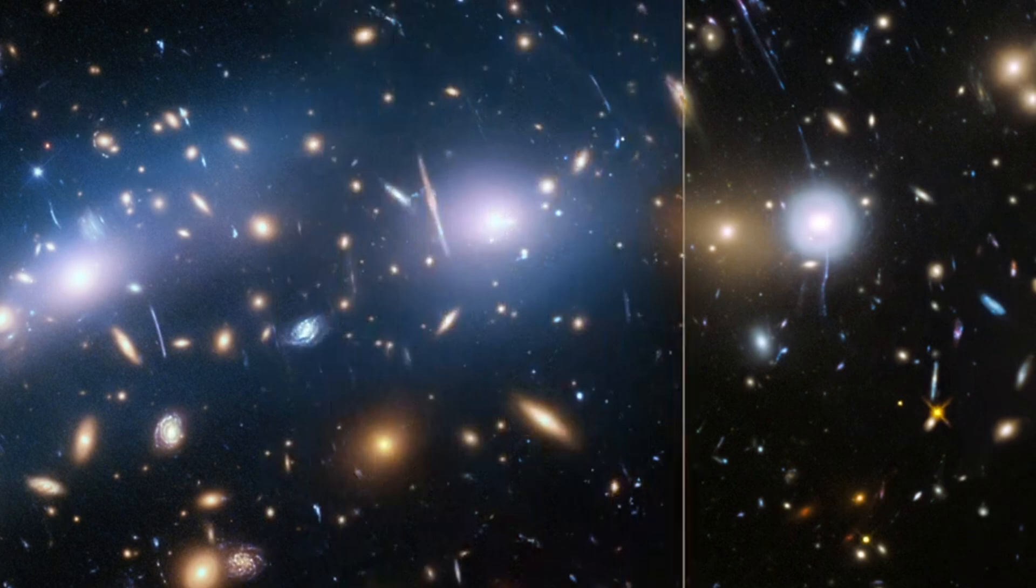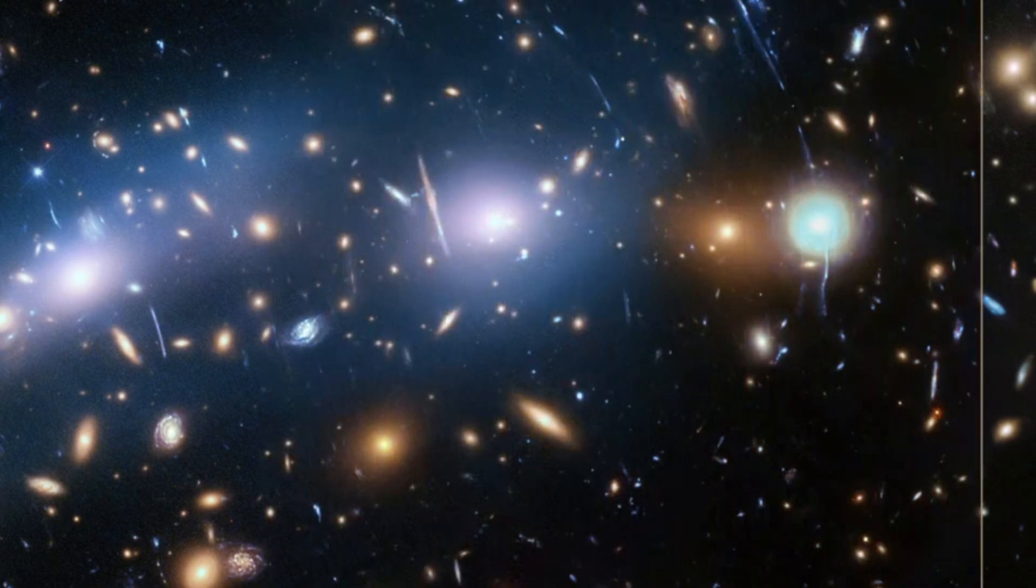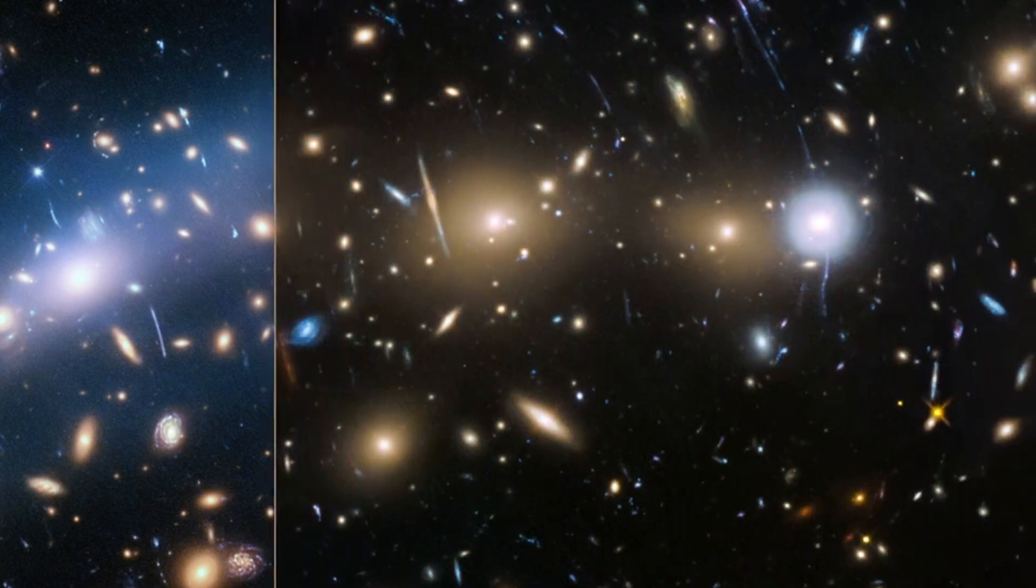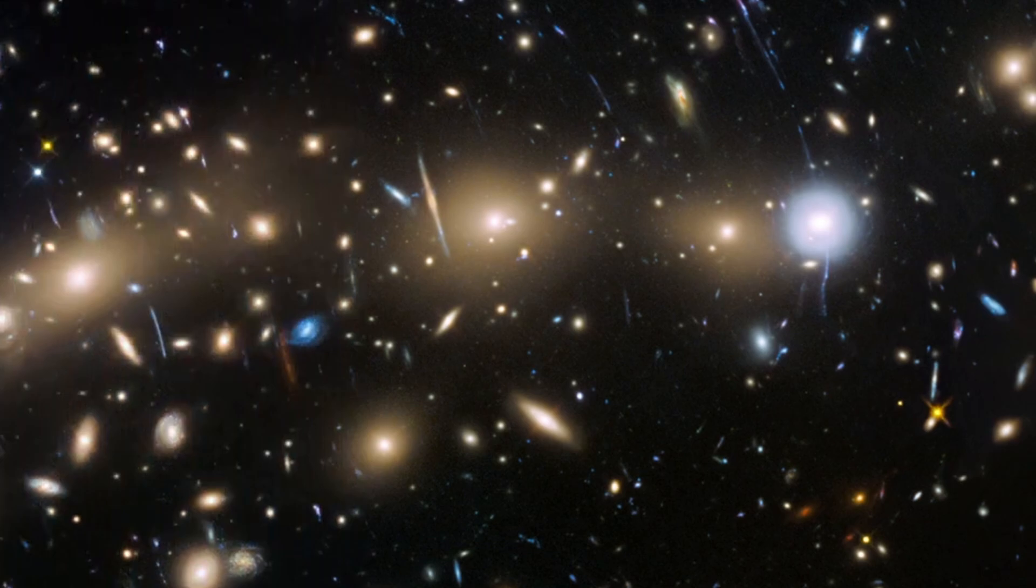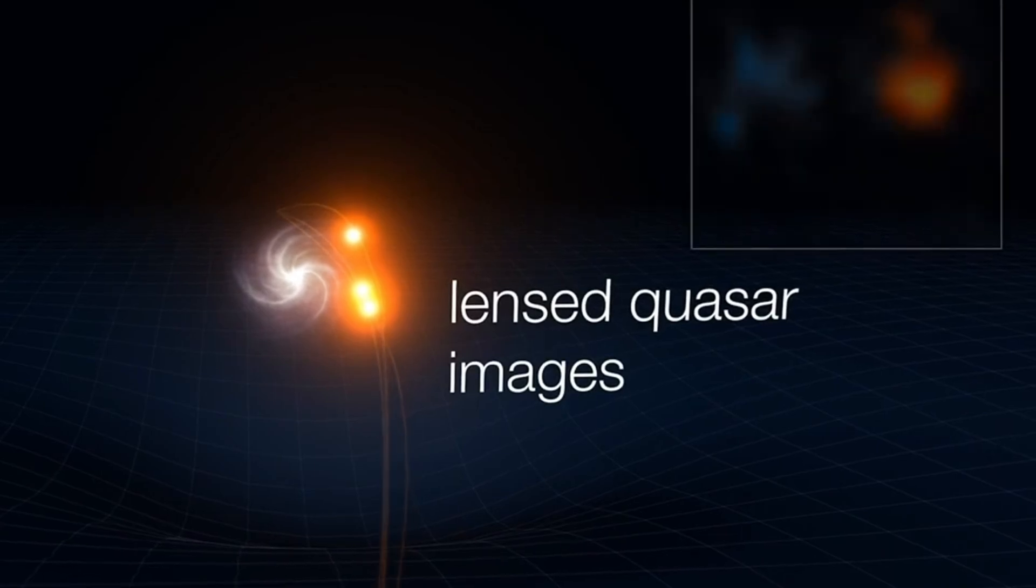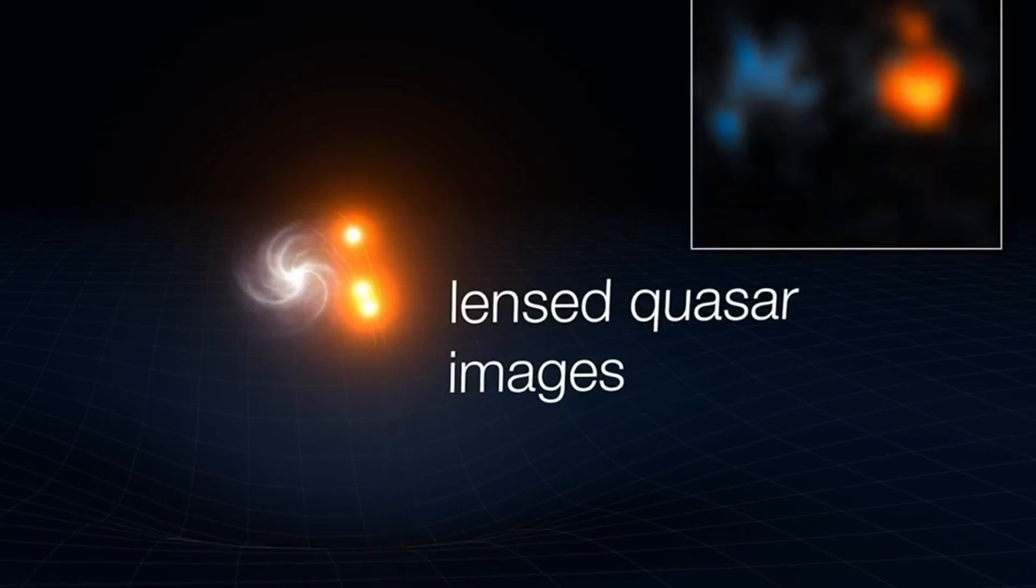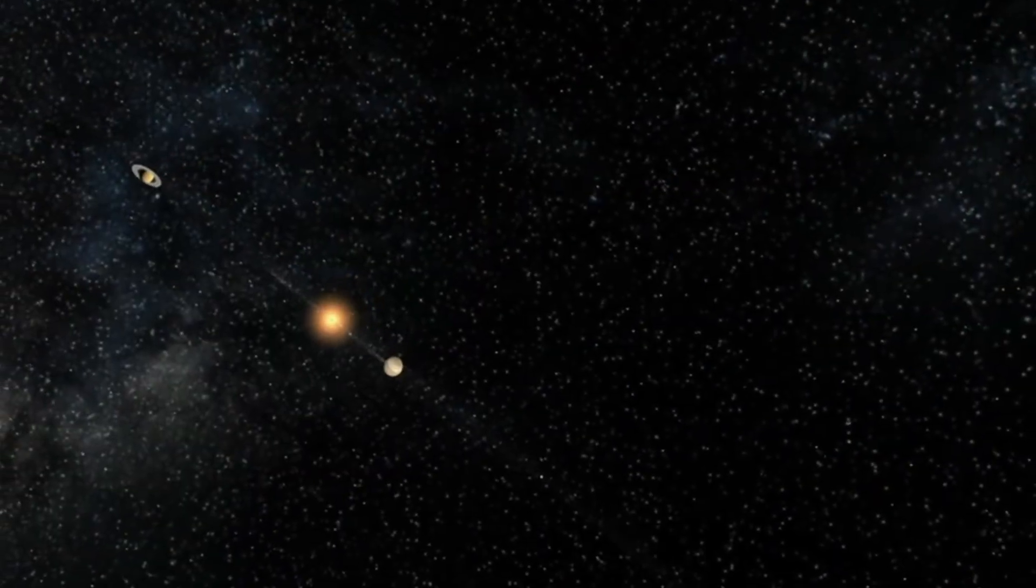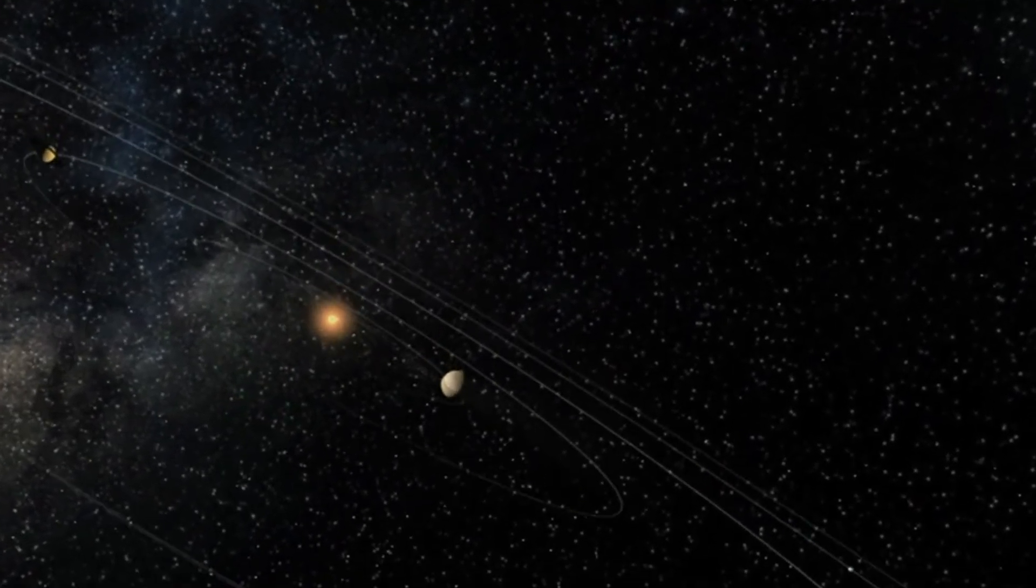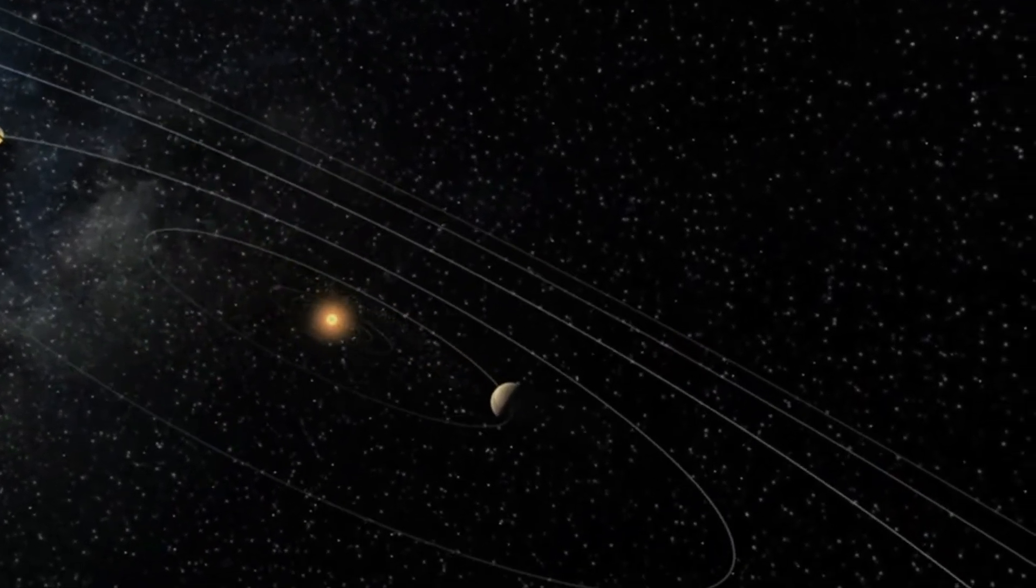There's a good chance that Earendel is a Population 3 star if it's a single high-mass star. However, if follow-up studies find that Earendel is only made up of primordial hydrogen and helium, it would be important evidence for Population 3 stars. Population 3 stars are thought to have played a crucial role in the enrichment of the early universe, seeding it with the heavier elements essential for the formation of planets and eventually life as we know it.